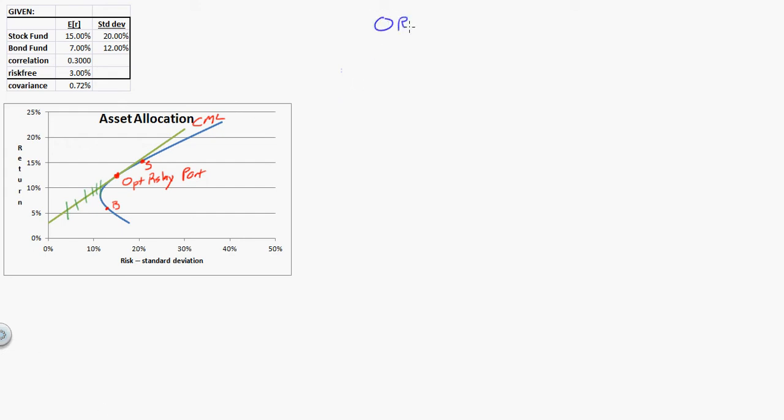For the optimal risky portfolio, the way that you put in the stock fund is going to be equal to capital RS times the variance of the bond fund, minus capital RB, covariance of the stock with bond, over capital RS times the variance of the bond fund, plus capital RB, the variance of the stock fund. And this would be minus RS plus RB, all that times the covariance of stock with bond.